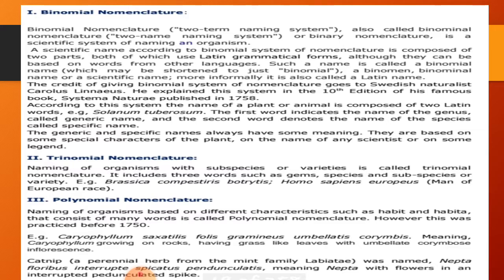Both parts use Latin grammatical forms, although they can be based on words from other languages. These are called binomial names, which may be shortened to just 'binomial.' The creator of the binomial system was the Swedish naturalist Linnaeus. He used binomial nomenclature in the 10th edition of his famous book Systema Naturae, published in 1758.